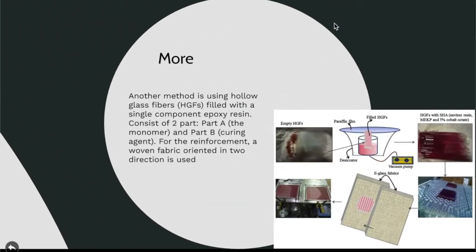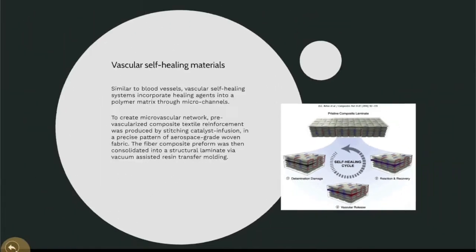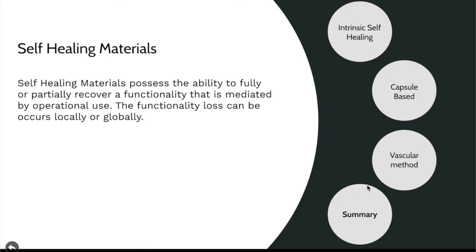Another vascular example uses glass fibers with electronic glass fabrics and microfluidics. The system requires at least a monomer and a curing agent. These are the three established methods in self-healing that many researchers have already developed.